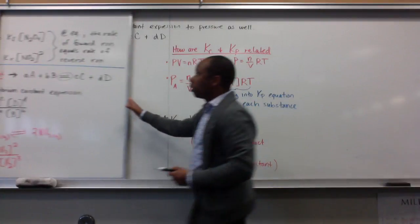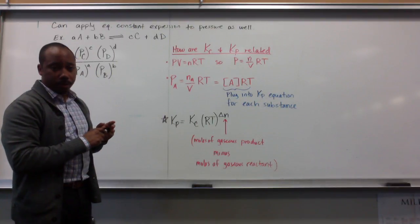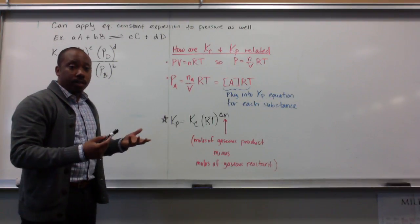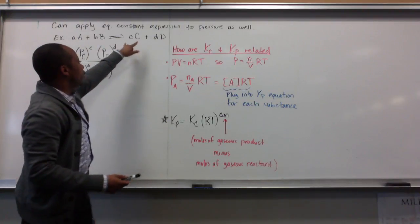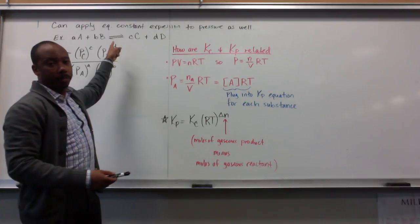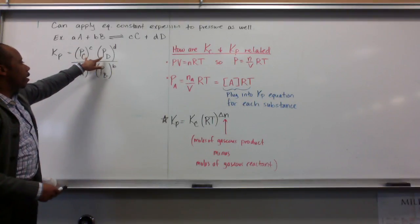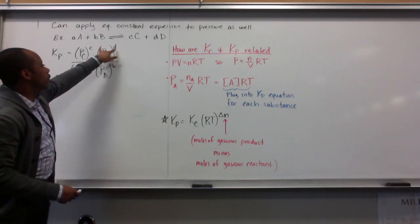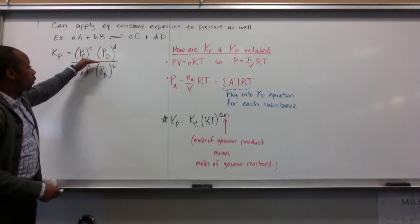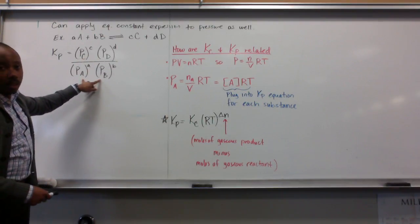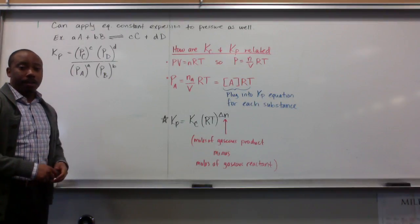We can also apply this to pressure. So we can apply this equilibrium constant expression to pressure. Instead of saying K sub C, we would say K sub P, because we're talking about the pressure at equilibrium. We're still going to use this format of a general reaction. A plus B goes to C plus D, and it's an equilibrium. Now, K sub P equals the pressure of my products raised to the power of their stoichiometric coefficients, and these are being multiplied times one another, divided by the pressures of my reactants raised to their stoichiometric coefficients, and this is being multiplied times one another. It's the same exact thing as K sub C, except I'm not using concentrations, I'm using pressures.